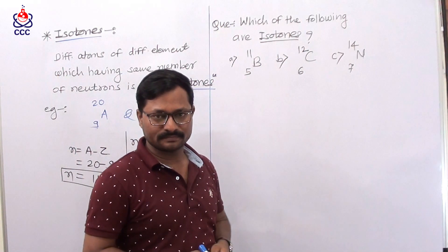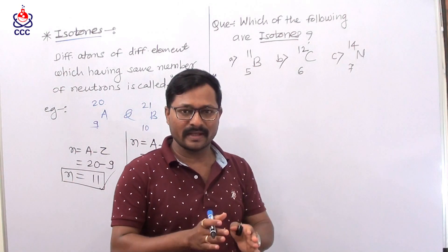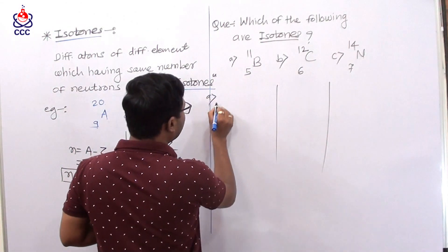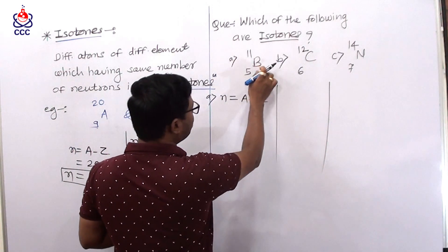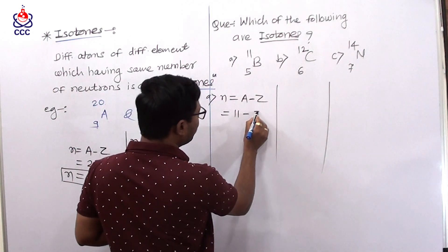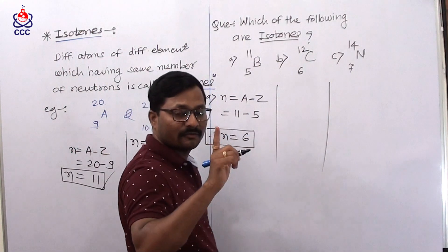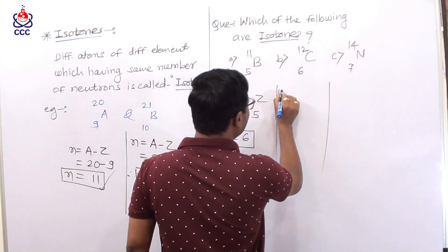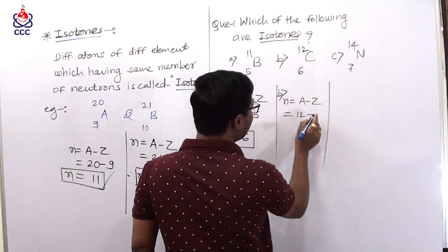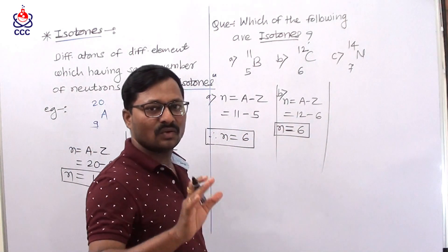Which of the following are isotones? We need to find the number of neutrons for each example. First case: boron B, atomic number 5, atomic mass number 11. Number of neutrons N equals A minus Z equals 11 minus 5 equals 6. So number of neutrons in the first example is 6. Second example: carbon C, atomic number 6, atomic mass number 12. Number of neutrons equals A minus Z equals 12 minus 6 equals 6. So number of neutrons equals 6.